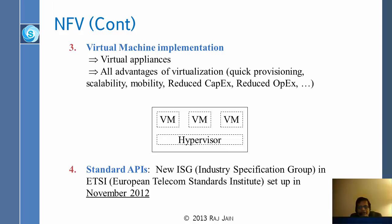The fourth idea is that if you have all these appliances, they need to be able to talk to each other. A new Industry Specification Group, ISG, was set up at ETSI — the European Telecom Standards Institute. This looks like it is coming more from the European side, since we have similar organizations in the United States. The first meeting was in November 2012, so it is just one year old.